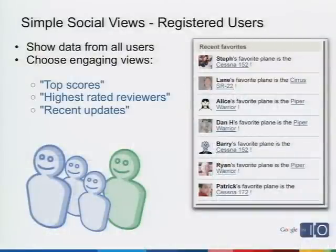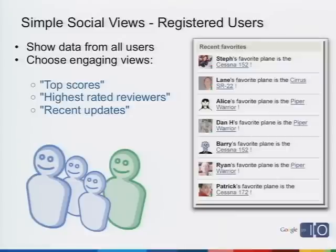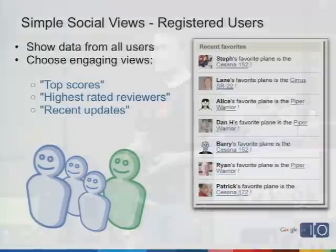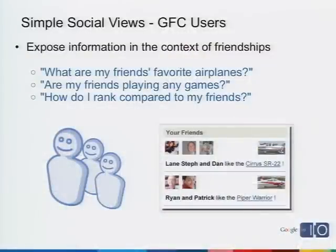Here's a simple social view showing what users are on the site — one of the easiest views to implement. Basically, you scroll over the recent updates list and, for example, on Plane Crazy we're showing the recent favorites of someone on the site. When someone favorites something, here's a hypothetical view of the last ten updates. It's not spectacularly interesting, but it benefits both Friend Connect users and registered users the same. In the context of different sites, maybe you want to float top scores, highest-rated players, recent updates, and so on.